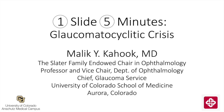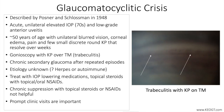This is Malika Hook from the University of Colorado, discussing glaucoma cyclitic crisis in this edition of one slide in five minutes. Glaucoma cyclitic crisis, also known as Posner-Schlossman syndrome, is an acute unilateral disease process with mild anterior chamber inflammation and elevation of intraocular pressure that is recurrent.